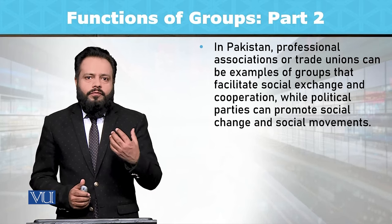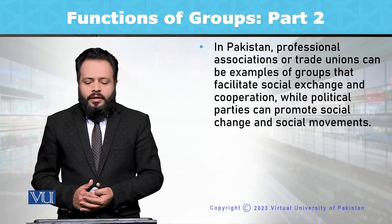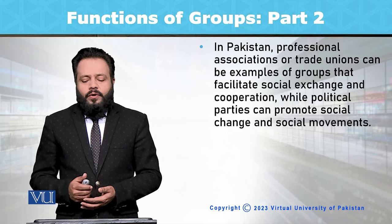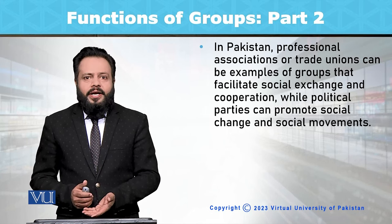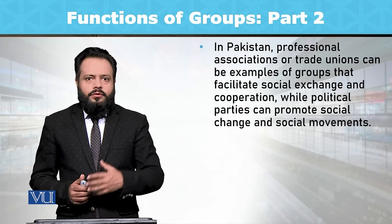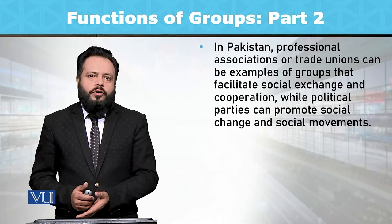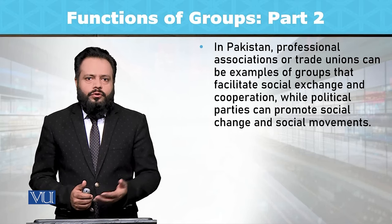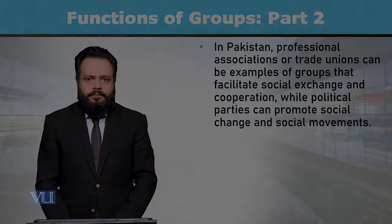Taking the example of Pakistan, professional associations and trade unions are different examples of secondary social groups that facilitate social exchange and cooperation, while political parties can promote social change and social movements. Social change, social exchange, and cooperation are key important functions of these social groups — both formal as well as informal groups are important for support.